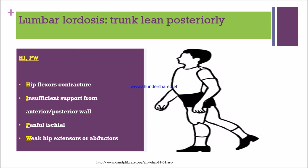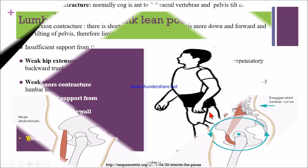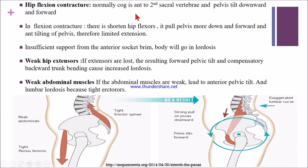Next is lumbar lordosis in transfemoral gait deviation. The trunk leans posteriorly. The mnemonic is 'high PW': H is hip flexors contracture, I is insufficient support from the anterior or posterior wall, P and W mean painful ischial. If the patient has weak extensors or abductors, there is lumbar lordosis. Normally the COG is anterior to the second sacral vertebra and the pelvis is tilted downward and forward.